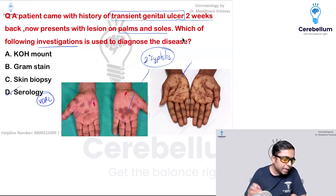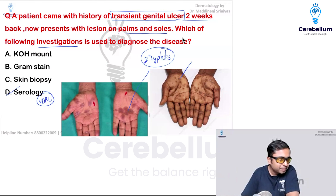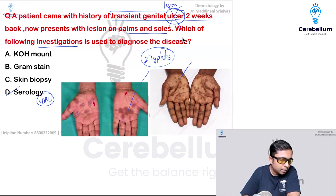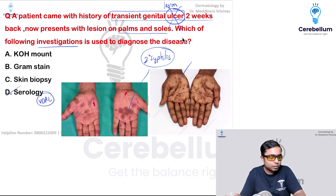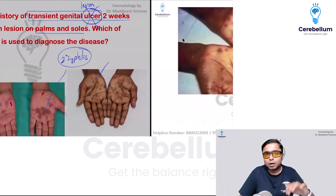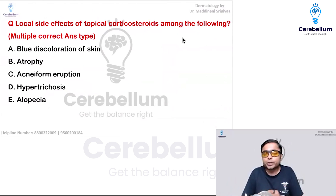In this question, only a transient genital lesion was mentioned — not specifically an ulcer. This was a multiple option type question. A Tzanck smear was present in the options for this question. Please message me personally or in the Cerebellum Academy Telegram group because depending on the specific details given in the question, the answers may differ. If it matches this particular scenario, then the answer is serology only.